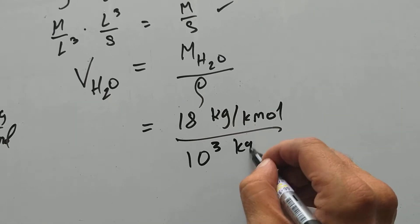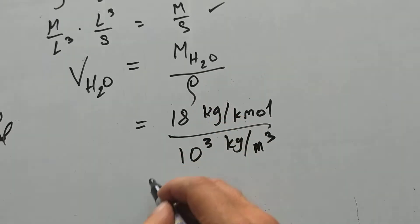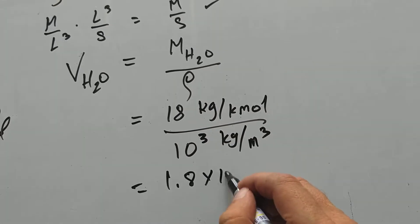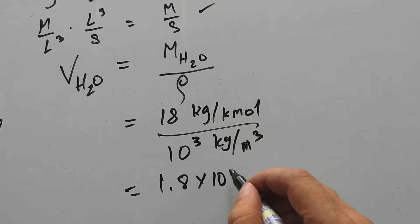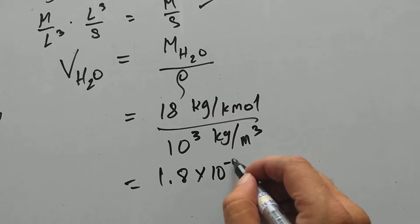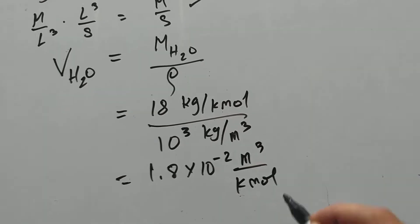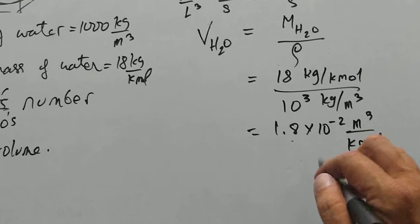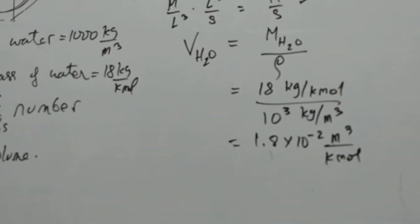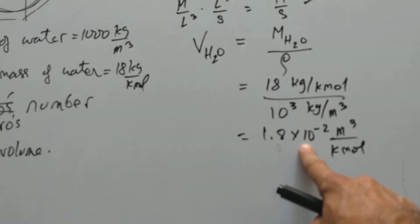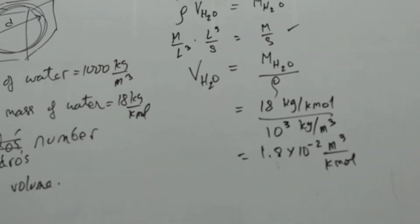10 cubed kilogram per meter cubed. If I work out all the units, this goes on top and I get 1.8 times 10 to the minus 2 meter cubed per kilomole. So, one kilomole of water takes up this volume. In other words, 18 kilograms of water takes up this volume. We're almost there.